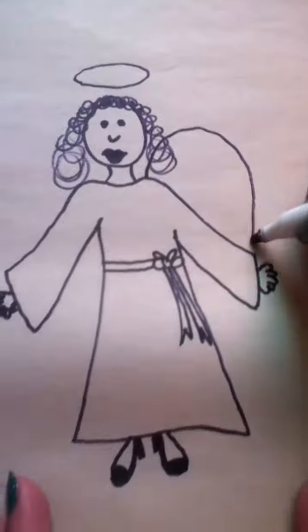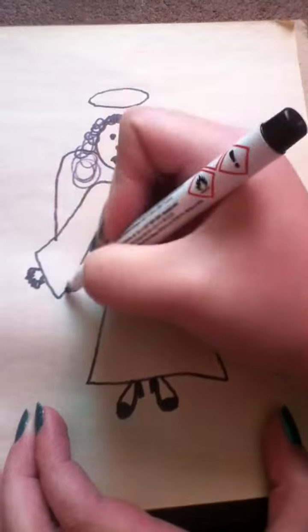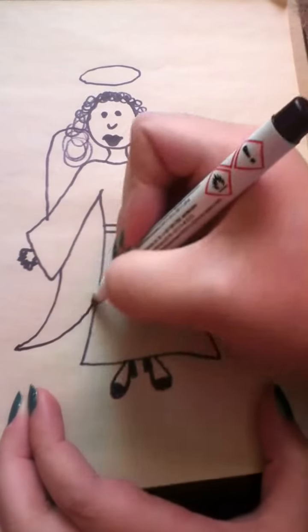And then we're going to give her her wings. You can do her wings however you want. And there you have an angel. Here you go.